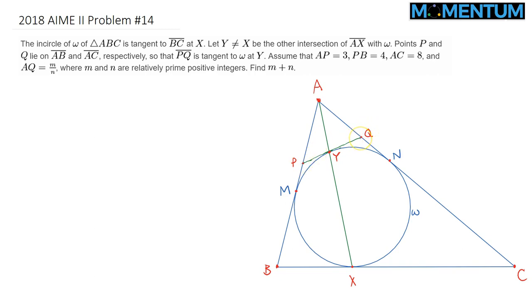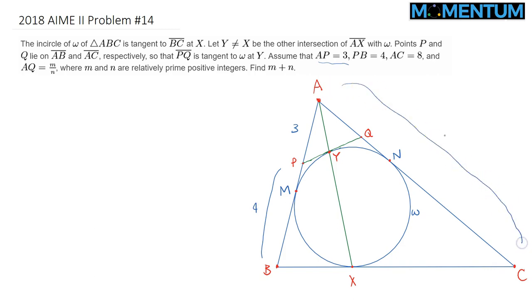As you can clearly see here, once we are done with this construction, we are told that AP measures 3, PB is 4, so AB is 7, side AC is 8, and we would like to calculate AQ, which can be written as M over N.